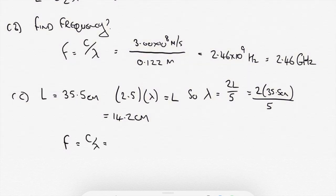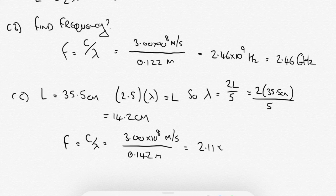And if we were to calculate the frequency now of those waves, F equals C over lambda equals 3 by 10 to the 8 meters per second over 0.142 meters, that would give us a new frequency of 2.11 by 10 to the 9 hertz. Or again, that's 2.11 gigahertz. Very good.